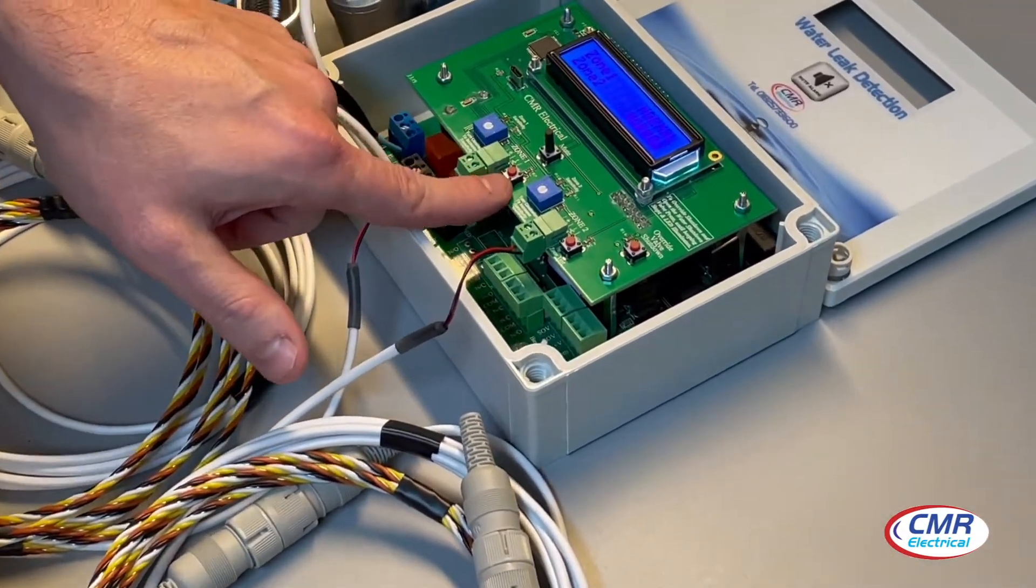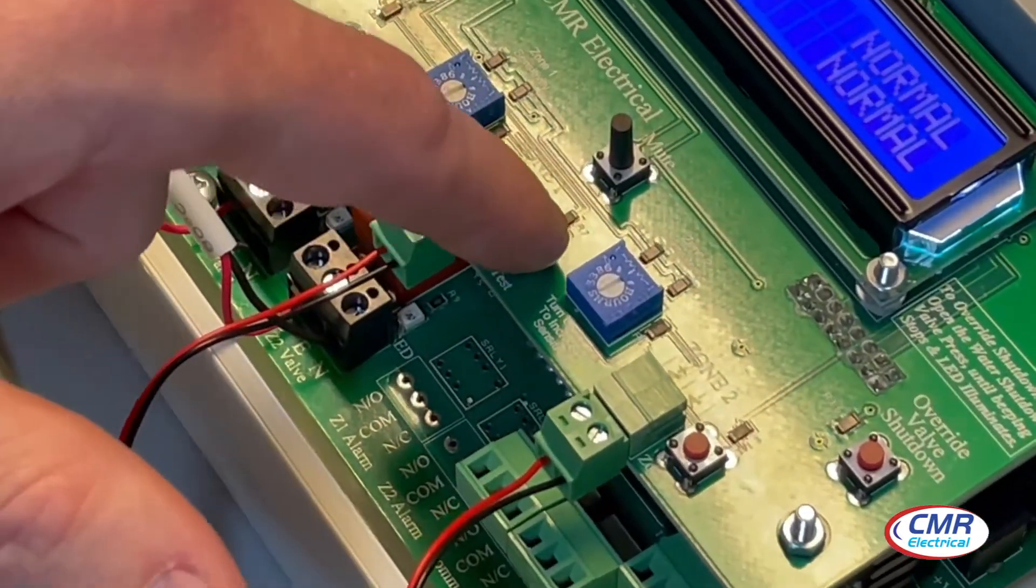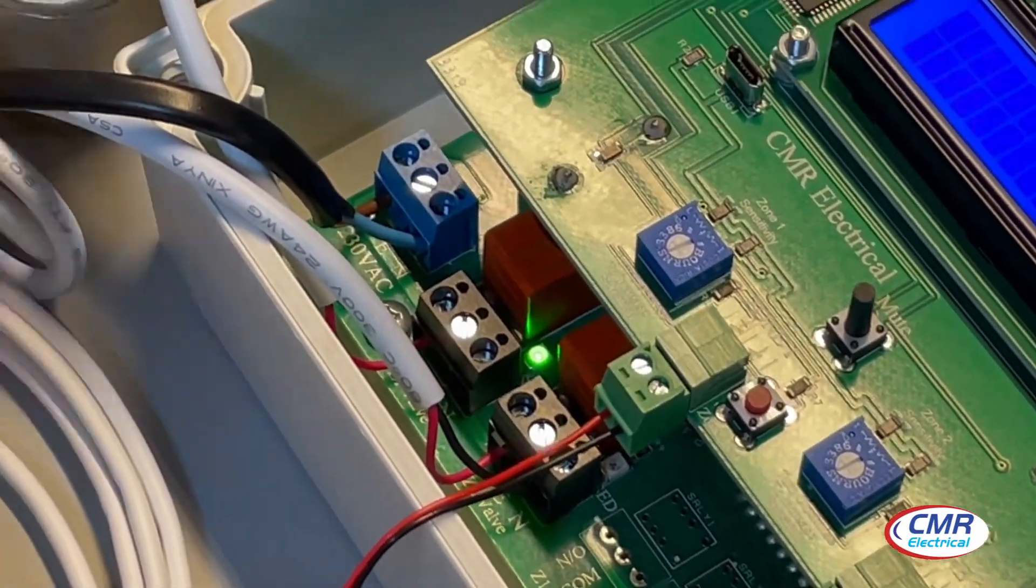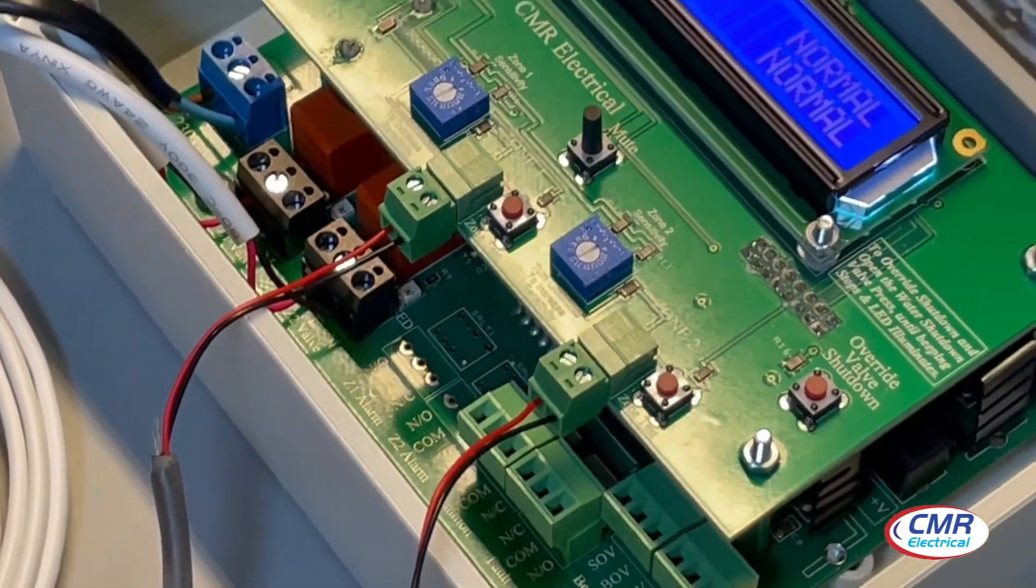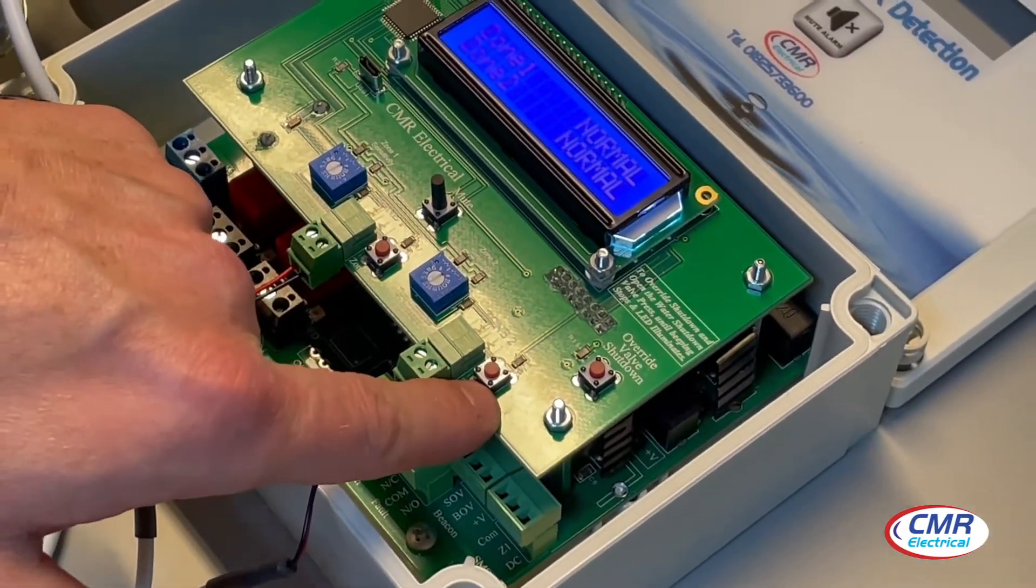These little red push buttons here, one for every zone, is a test button. You can press the button if you want to test it to go into alarm. Again, you have one per zone, so zone 2 will have one as well.